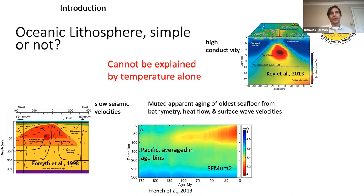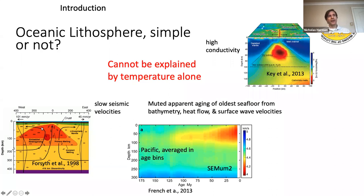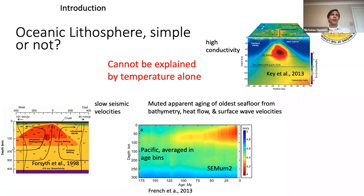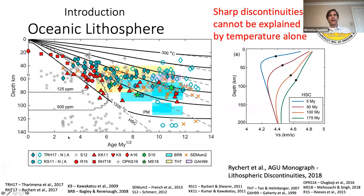There are a whole host of other observations besides that. There are often observations of high conductivities beneath mid-ocean ridges — this is a study from Kerry Key at Nine North. There's also the classic MELT experiment cartoon showing a very broad inferred melt triangle beneath the mid-ocean ridge, and another picture from Scott Ritsema's Berkeley model. These two studies invoked melt to explain very low velocities in the mantle, and there are also other observations suggesting that there may be more than just temperature alone.